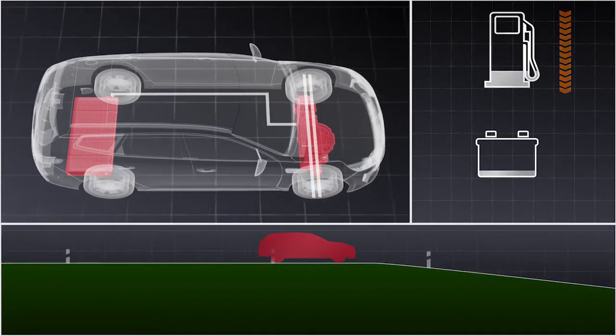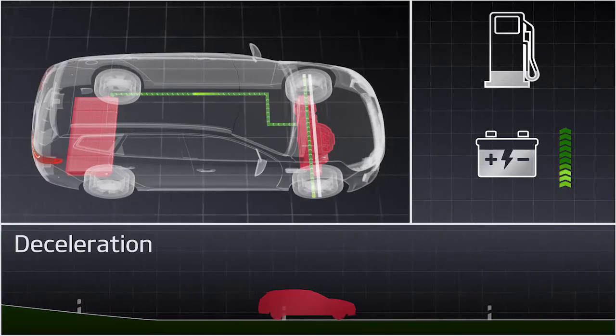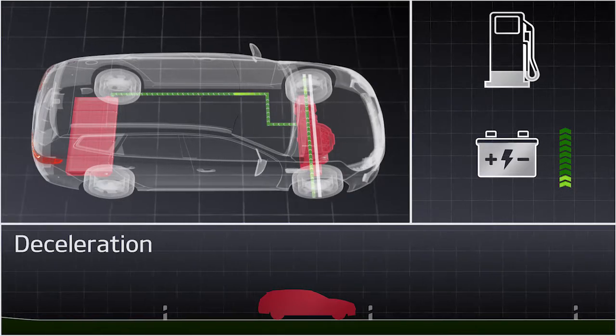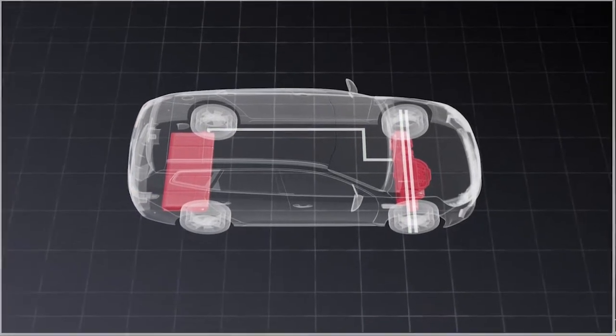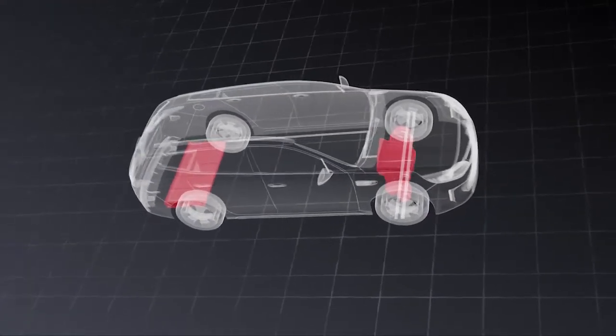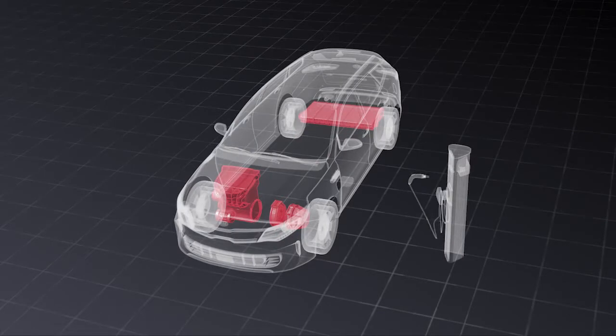The system's regenerative braking system captures energy whenever vehicle speed decreases and stores it in the battery for future use. In addition, plug-in hybrids can be externally charged via a charging cable in order to maximize the high voltage battery levels.